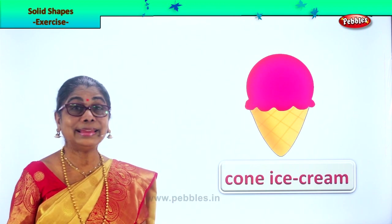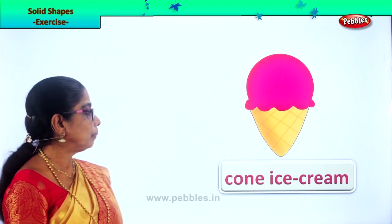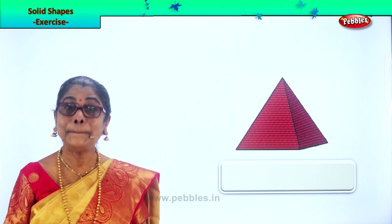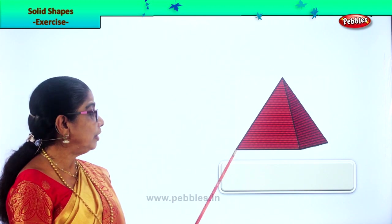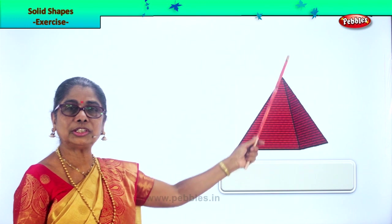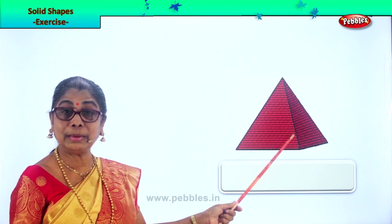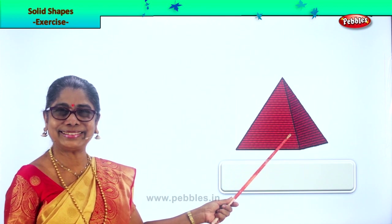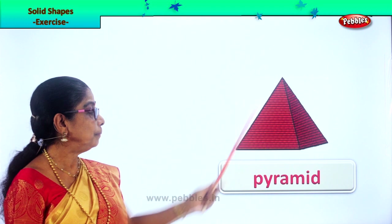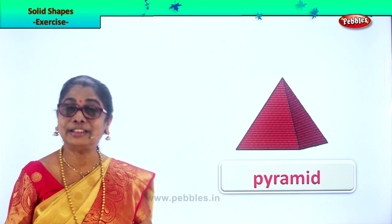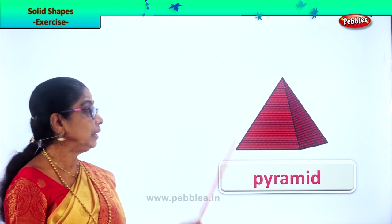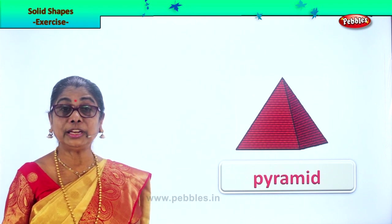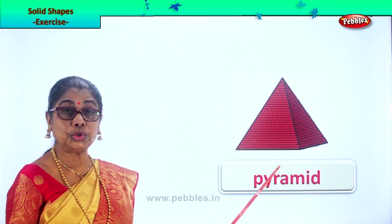So we are looking at examples of cone. What is this? Pyramid — yes, very good! A pyramid also has a shape of a cone. Ask mummy to show you some pictures of pyramids. A pyramid is a perfect cone. You enjoy looking at this.